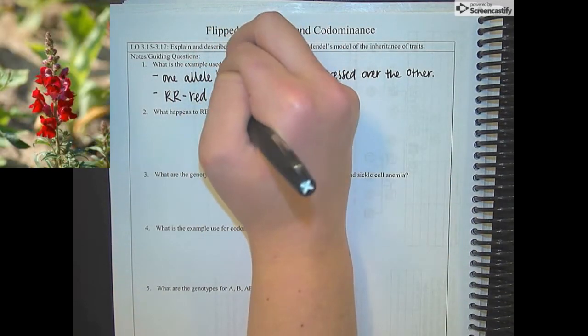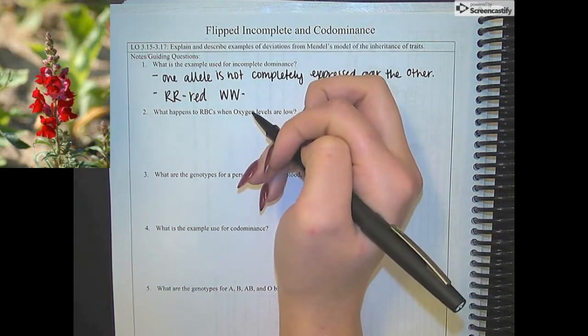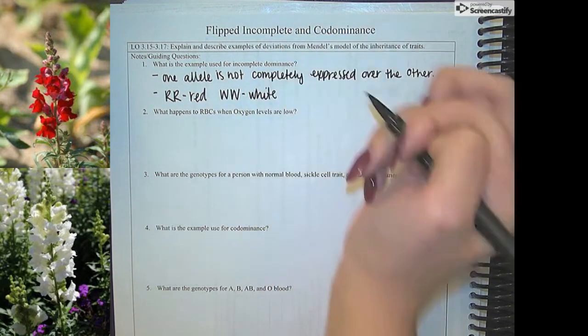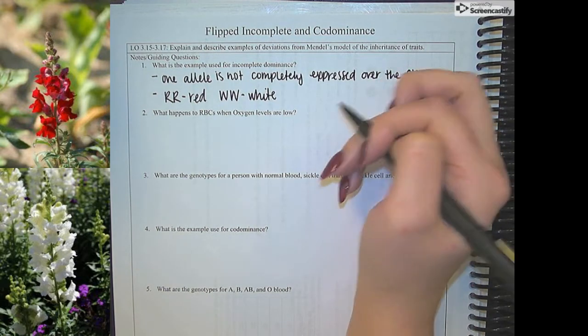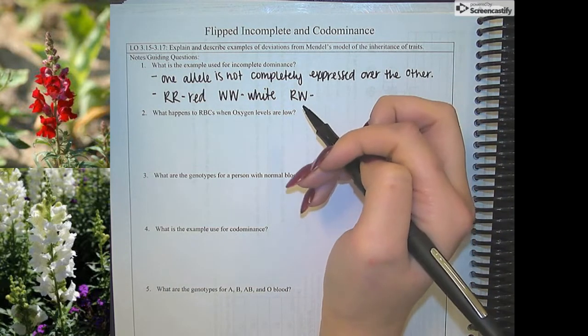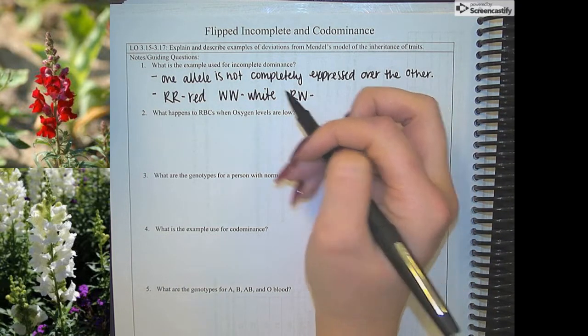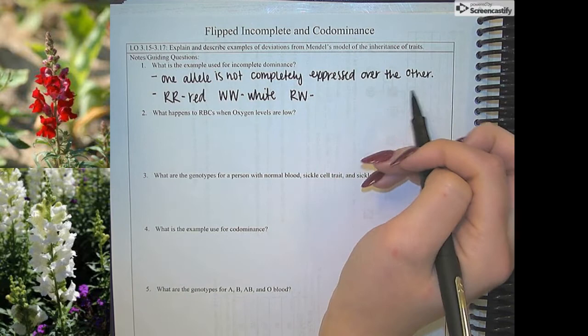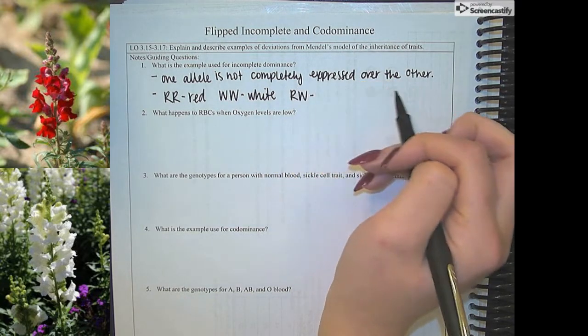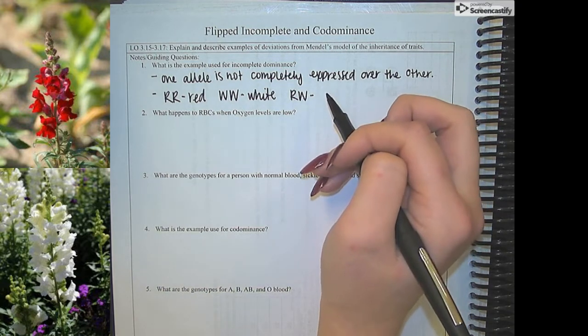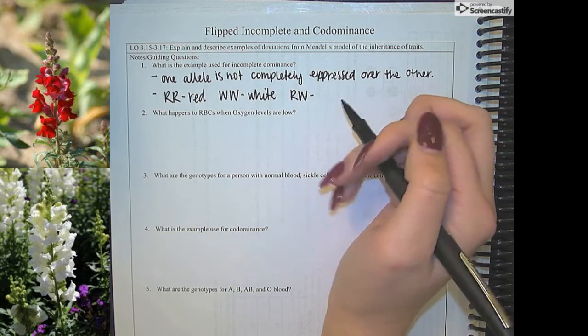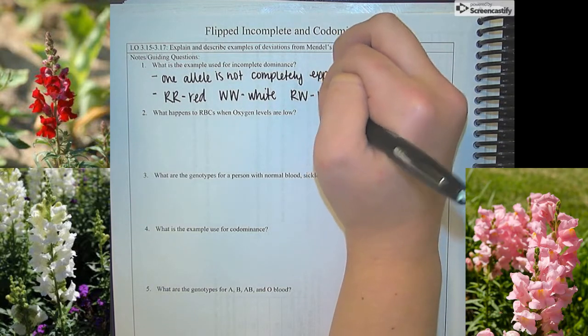If there are two white alleles, so if it's WW, then it is going to be white. Now where it gets interesting is if you have one red allele and one white allele. Red is not going to be completely expressed over the white, or white is not going to be completely expressed over the red. So it's going to give you this incomplete or in-between or intermediate color, which would be pink in this case.